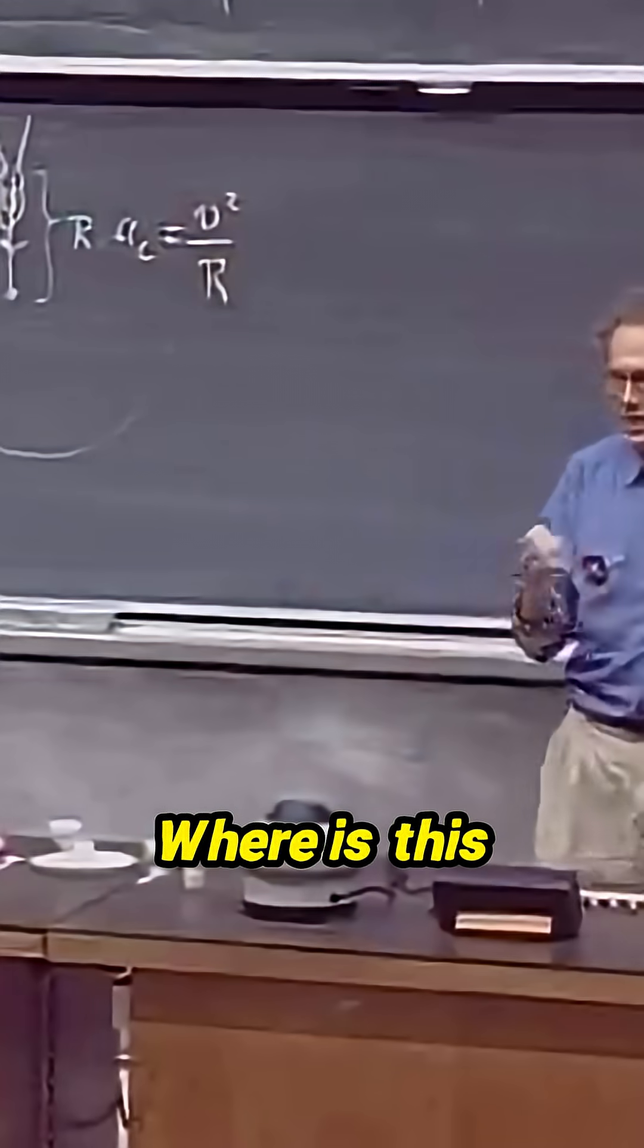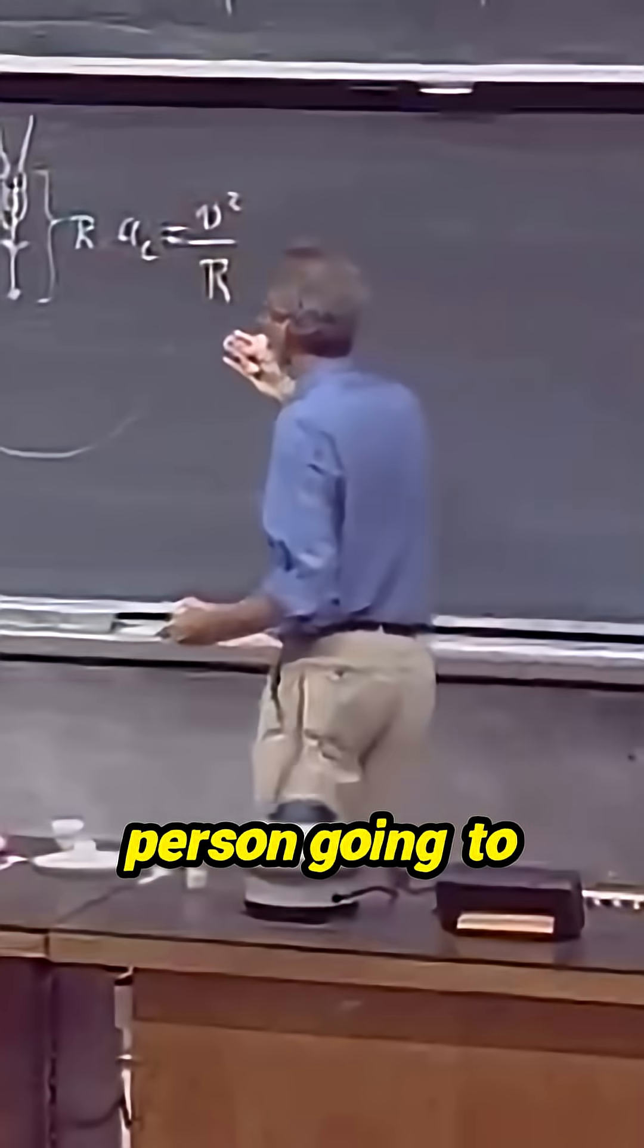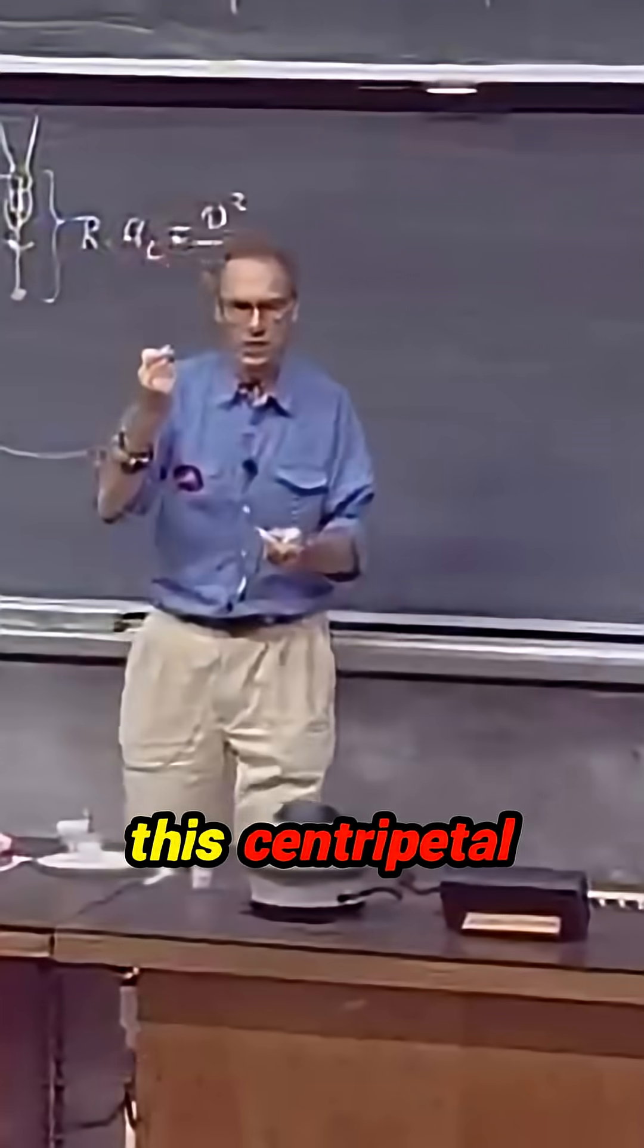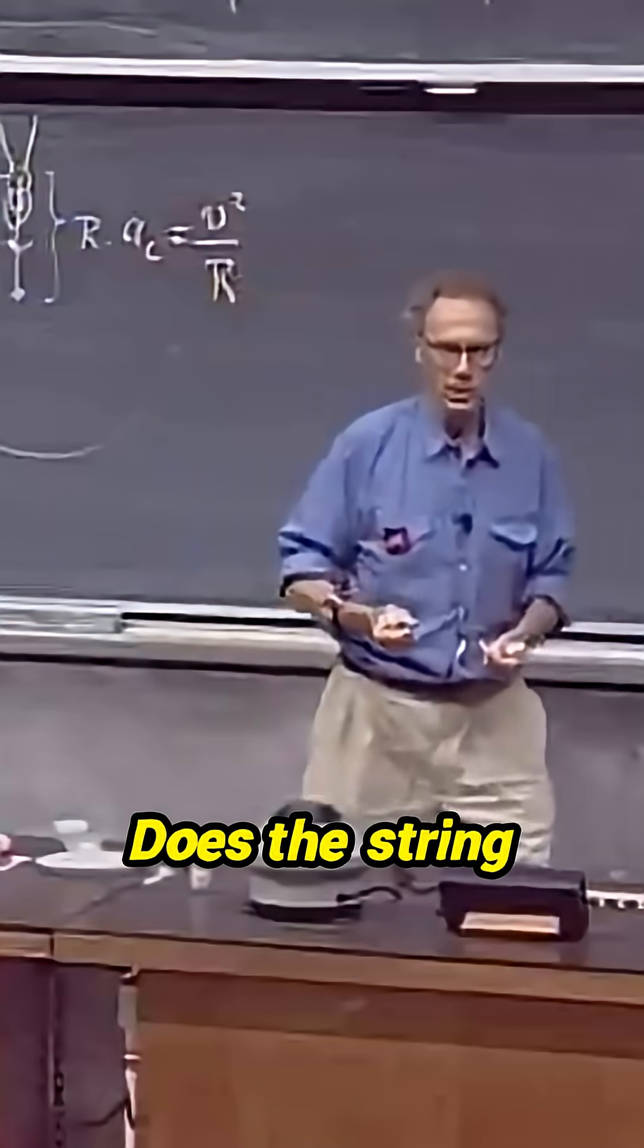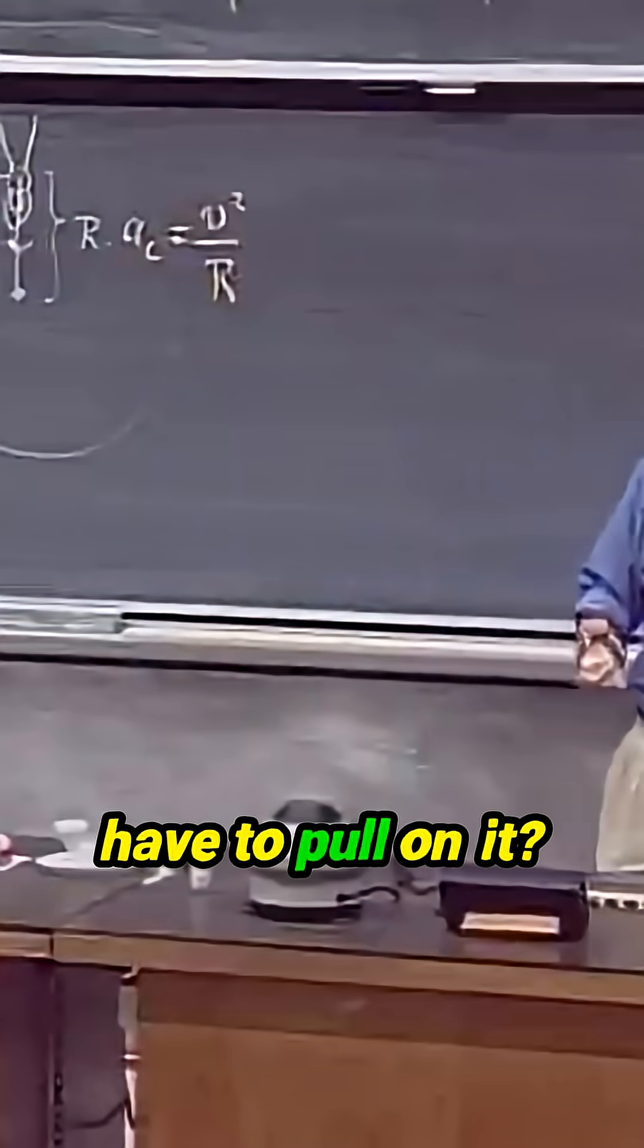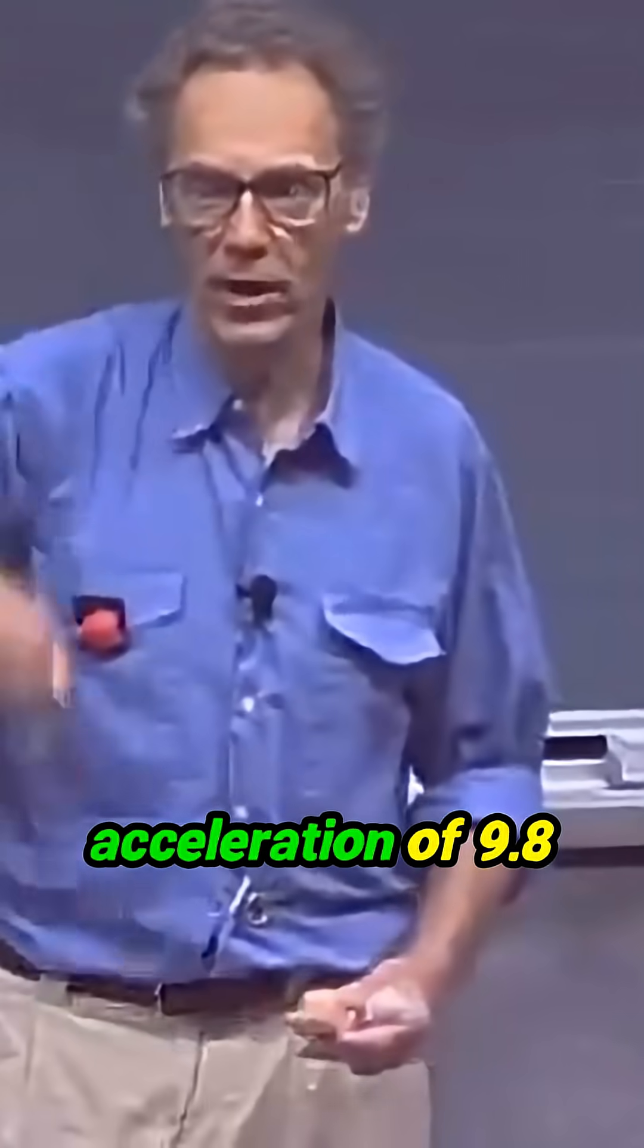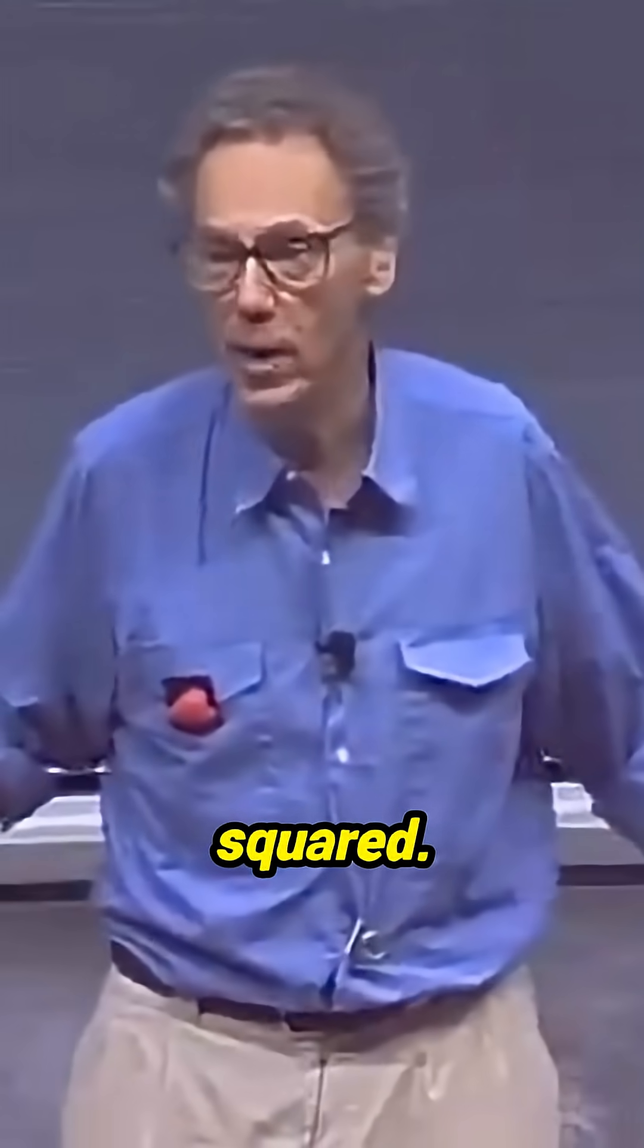Where is this person going to get the push or the pull from for this centripetal acceleration? Does the string have to pull on it? No, because there's always gravity, and gravity gives you an acceleration of 9.8 meters per second squared.